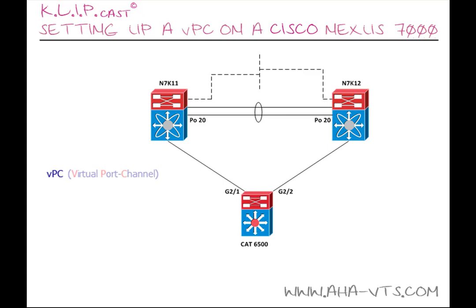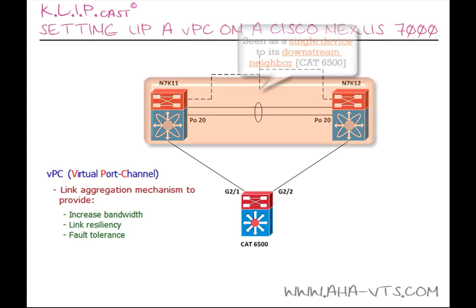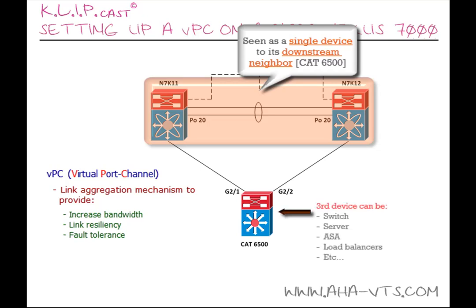A VPC, or virtual port channel, is a proprietary link aggregation mechanism developed by Cisco to provide increased bandwidth, link resiliency, and fault tolerance, by which two physical devices will appear as one device to a third device. That third device could be a switch, server, or any other networking device that supports link aggregation technology — more specifically, 802.3ad LACP.